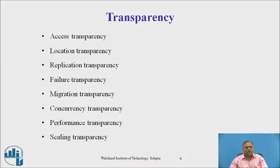Location transparency has two main aspects. The first is name transparency, where the name of the resource should not reveal any hint of the physical location of the resource. The second is user mobility, where a resource should be accessed by the same name from different nodes of the system. Both require a wide global resource naming facility.